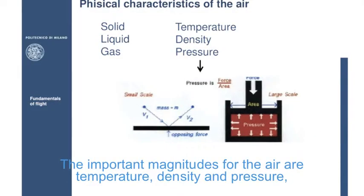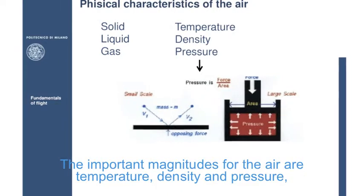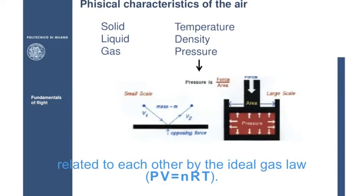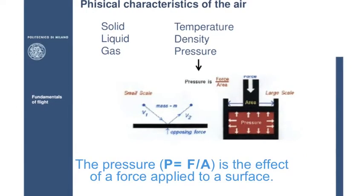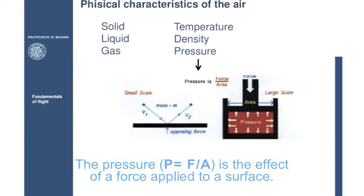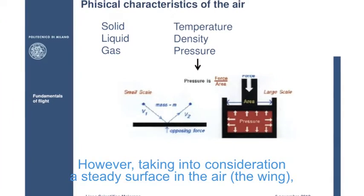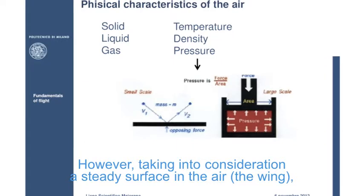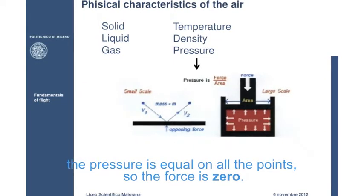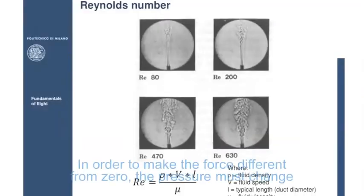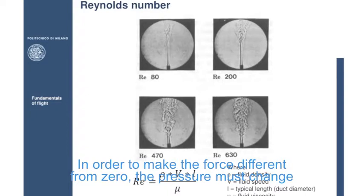The important magnitudes for the air are temperature, density and pressure, related to each other by the ideal gas law. The pressure is the effect of a force applied to a surface. However, taking into consideration a steady surface in the air, the wing, the pressure is equal on other points, so the force is zero. In order to make the force different from zero, the pressure must change.